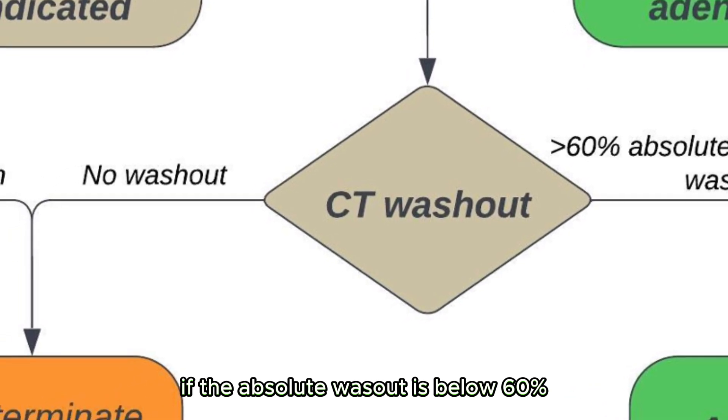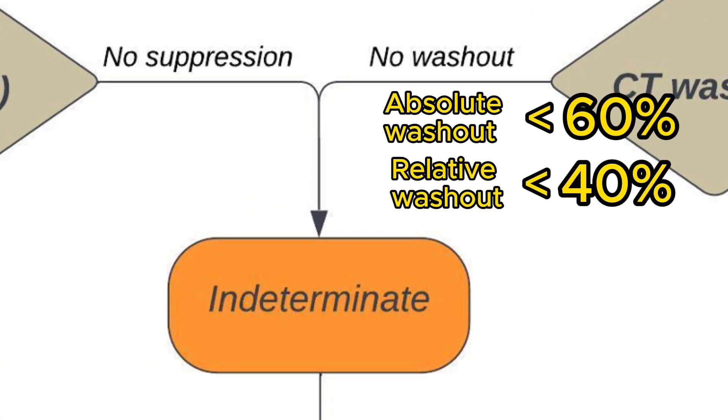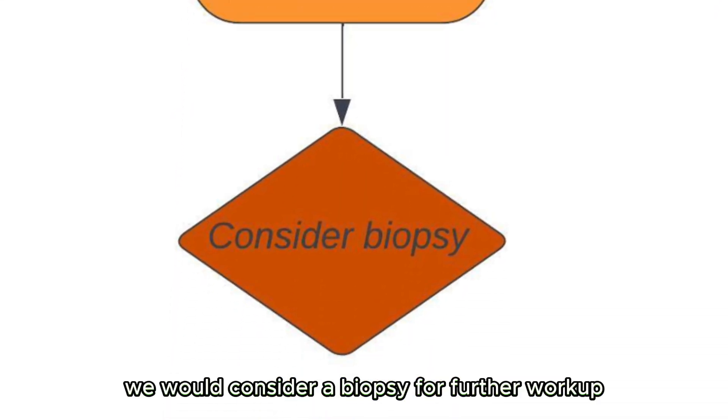If the absolute washout is below 60%, or the relative washout is below 40%, the tumor remains indeterminate. Just like before, we would consider a biopsy for further workup.